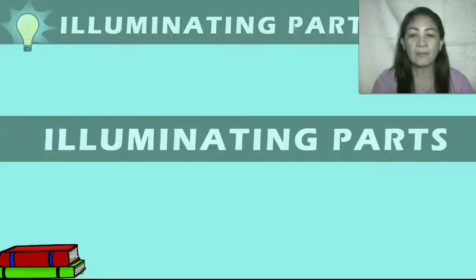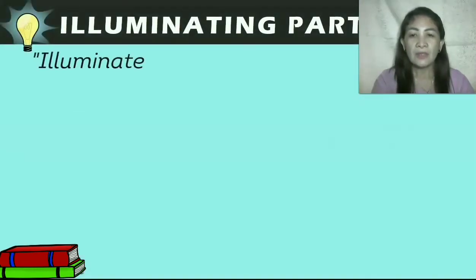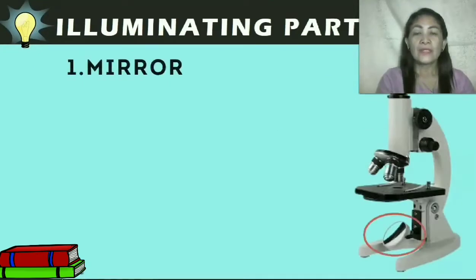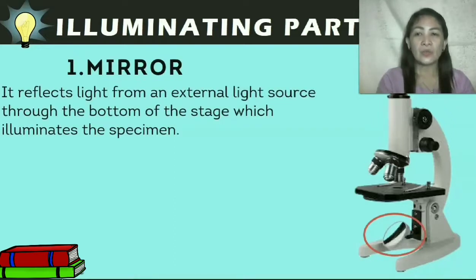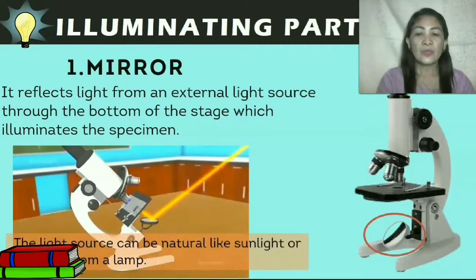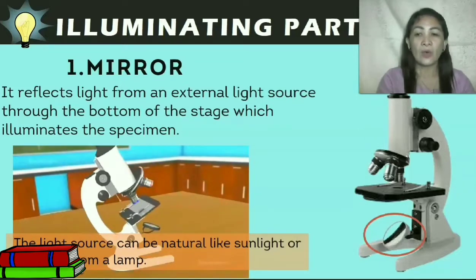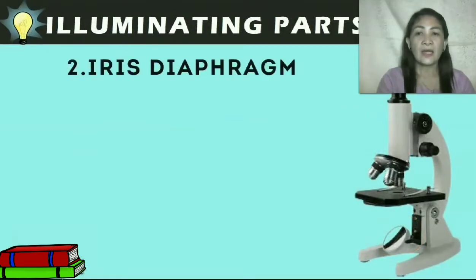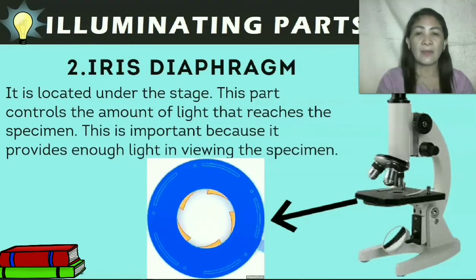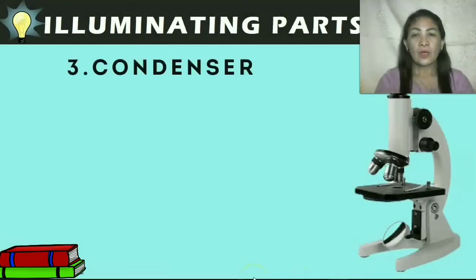Next are the illuminating parts. The word illuminate means to give light; therefore, these are the parts of the microscope that supply and regulate light towards the specimen. First is the mirror — it reflects light from an external light source through the bottom of the stage, illuminating the specimen. The light source can be natural like sunlight or artificial from a lamp. Next is the iris diaphragm, located under the stage. This part controls the amount of light that reaches the specimen, providing enough light for viewing.